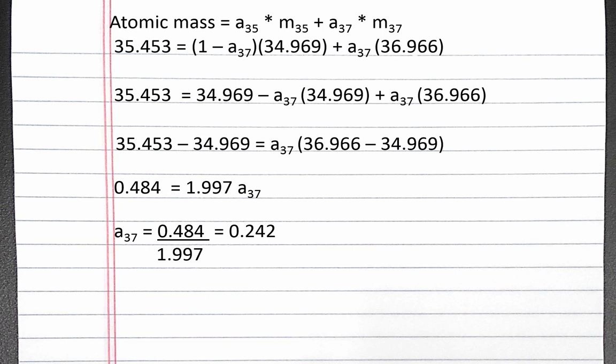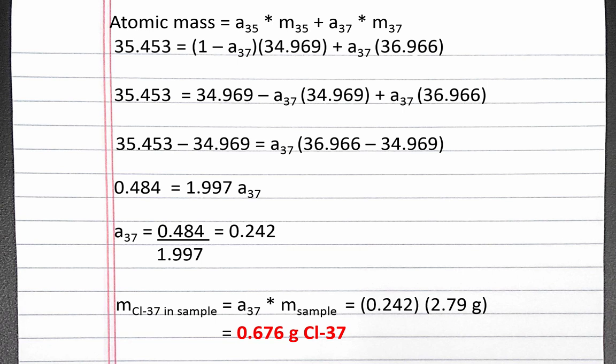To calculate the mass of chlorine-37 in our chlorine sample, we multiply the abundance of chlorine-37 times the mass of the sample. Plugging in our numbers and solving, we get 0.676 grams of chlorine-37 in the 2.79 gram sample.